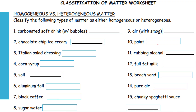Next is the Classification of Matter Worksheet. You need to classify this worksheet. Classify whether each item is homogeneous or heterogeneous matter. Number 1: What is number 1?